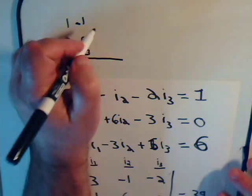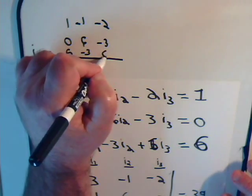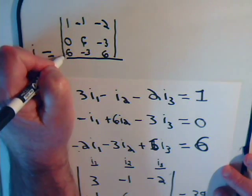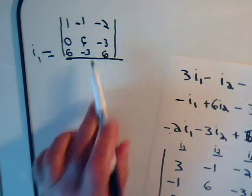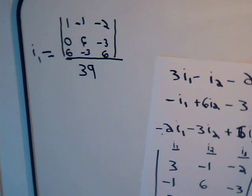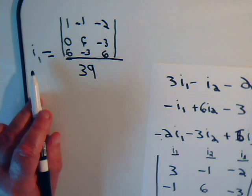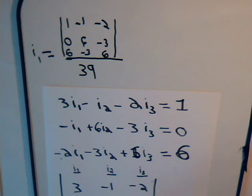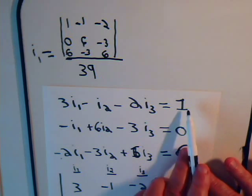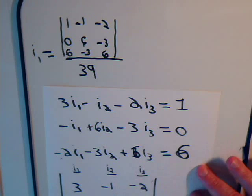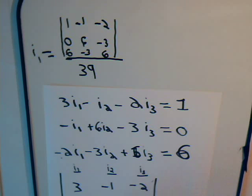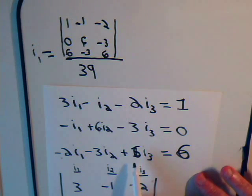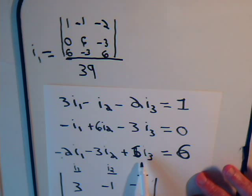This new determinant is divided by 39. For I2, we form another matrix where the second column is replaced by the numbers 1, 0, 6, with the first and third columns staying the same, divided by 39. For I3, we construct a third determinant where the third column is replaced by 1, 0, 6, again divided by 39.